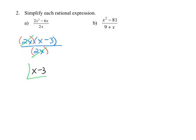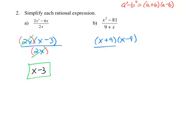In example b, x squared minus 81 over 9 plus x. You must factor to simplify. The numerator is a difference of two squares: x squared minus 81 factors as x plus 9 times x minus 9. The denominator 9 plus x can be rewritten as x plus 9. Since x plus 9 is a common factor in the numerator and denominator, it divides out, leaving the simplified answer x minus 9.